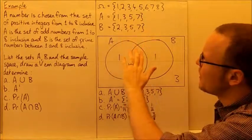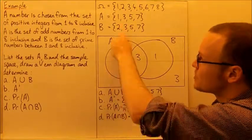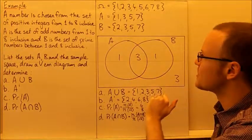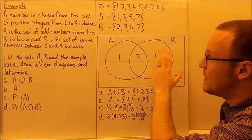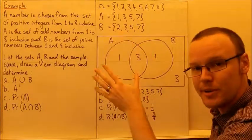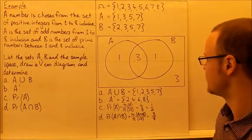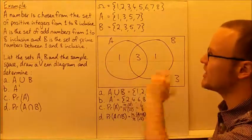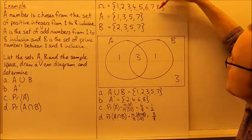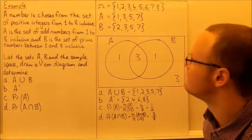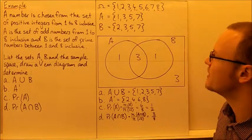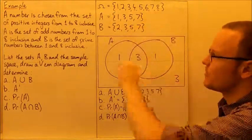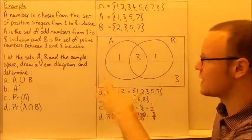A has 1, 3, 5, and 7. There's one element — which is 1 — that isn't in B, and they share three elements, so the intersection of A and B has three elements. B has the element 2 that isn't in A, giving 1 element on the other side. There are three values in the sample space not in either A or B: 4, 6, and 8, because they're even and not prime. Adding up: 1 plus 3 plus 1 plus 3 equals 8, which is the total number of values in our sample space.